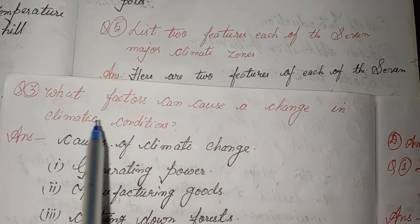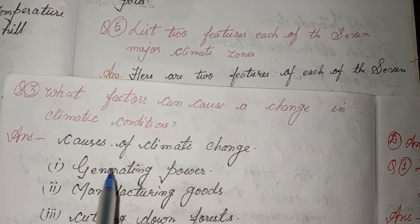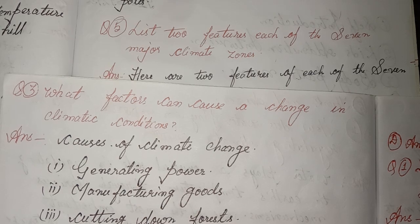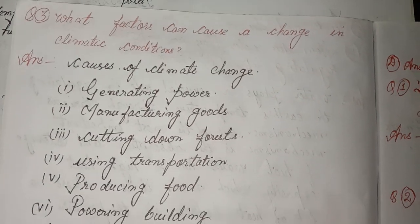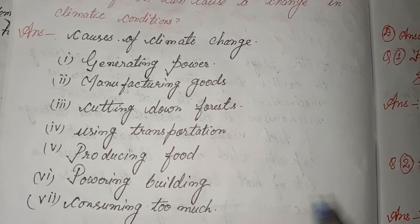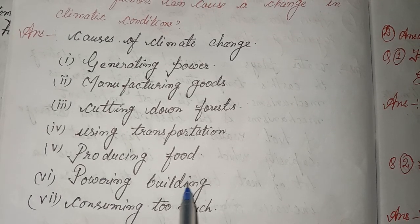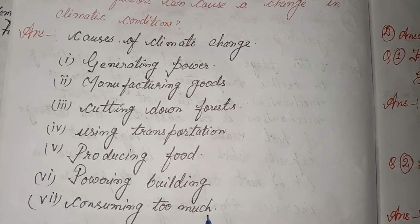Third, what factors can cause a change in climatic conditions? Answer: Causes of climatic change include generating power, manufacturing goods, cutting down forests, using transportation, producing food, powering buildings, and consuming too much.